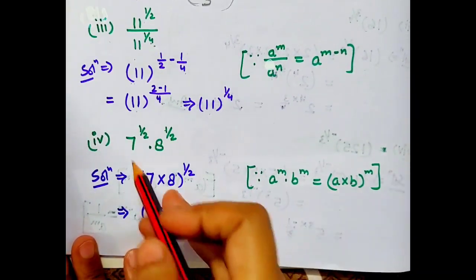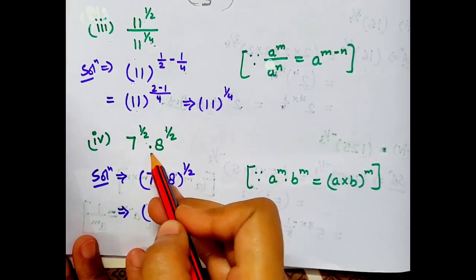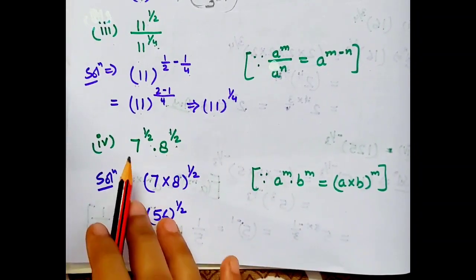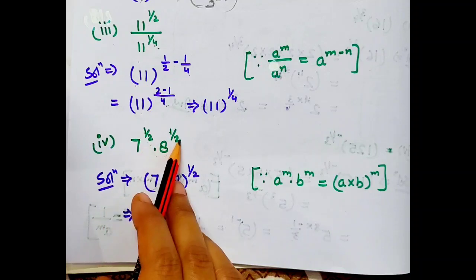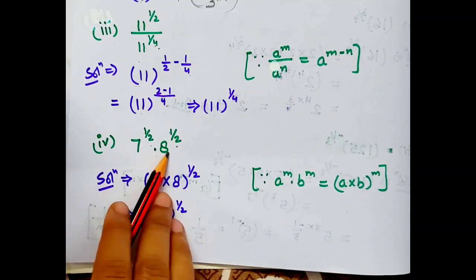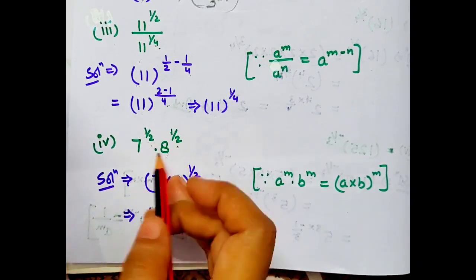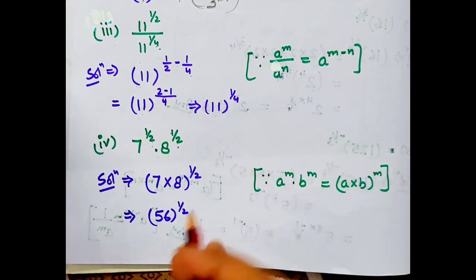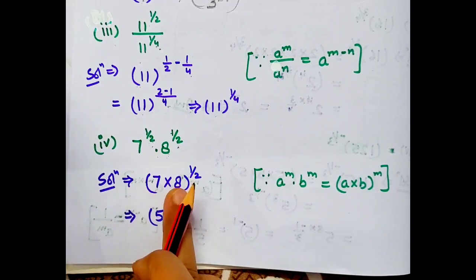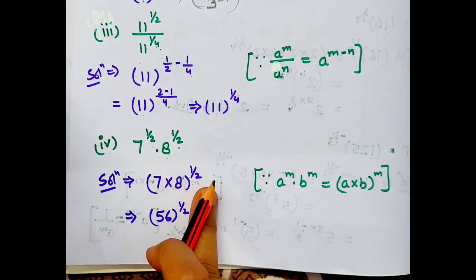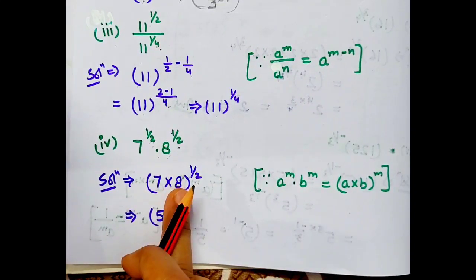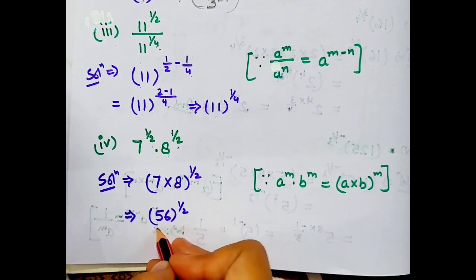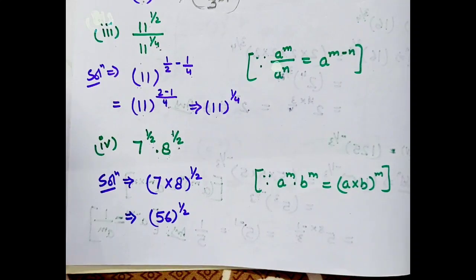Next part: 7 to the power 1 by 2 into 8 to the power 1 by 2. Yahan pe base different hai aur powers same hain. Jab base different ho aur powers same hoti hain, to base ka multiplication hota hai aur power jo hoti hai woh as it is copy kar di jati hai. To yahan: 7 into 8, whole to the power 1 by 2. 7 aur 8 ka multiply karke hume 56 milega. Answer humara 56 to the power 1 by 2.